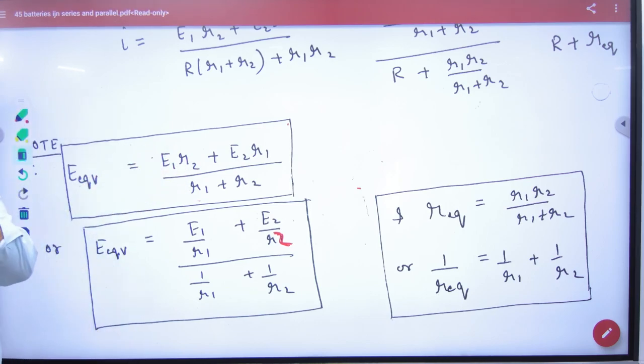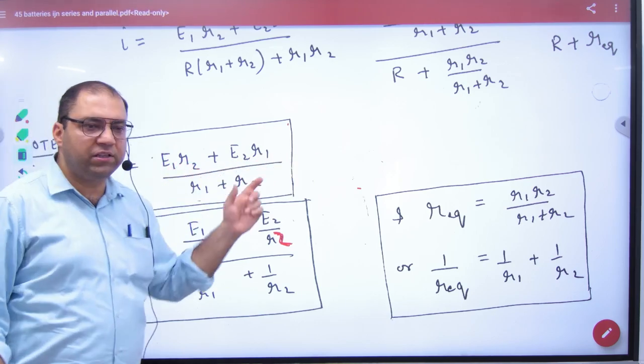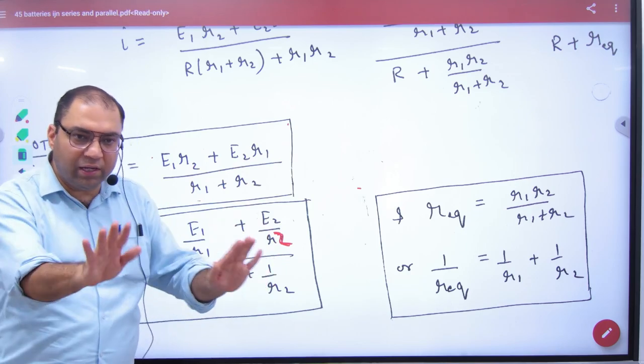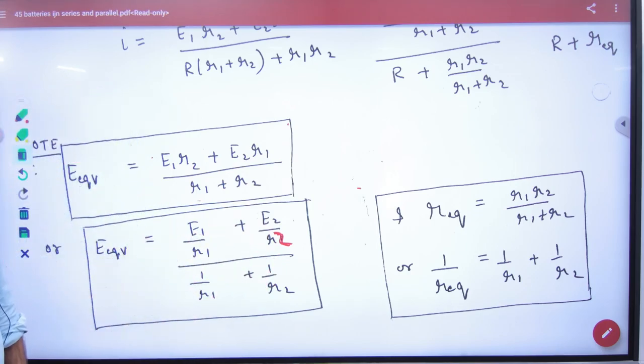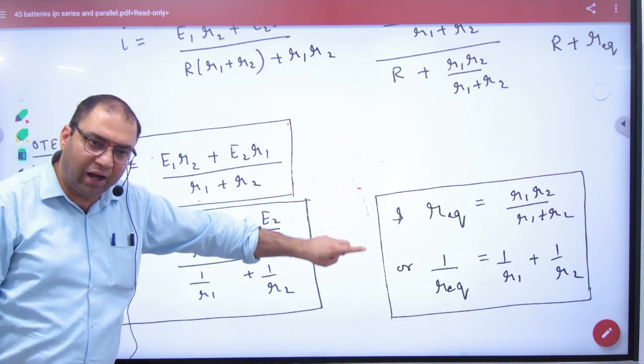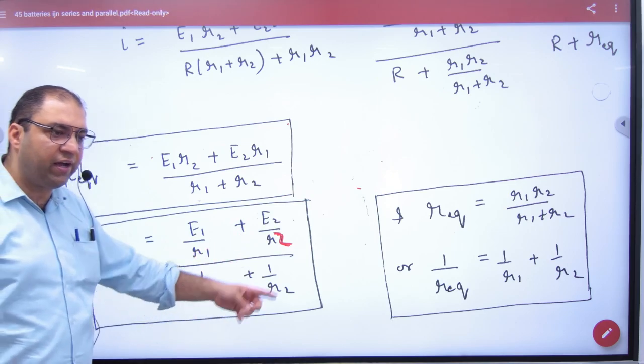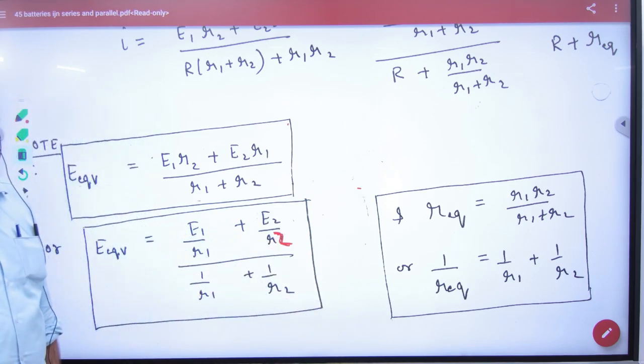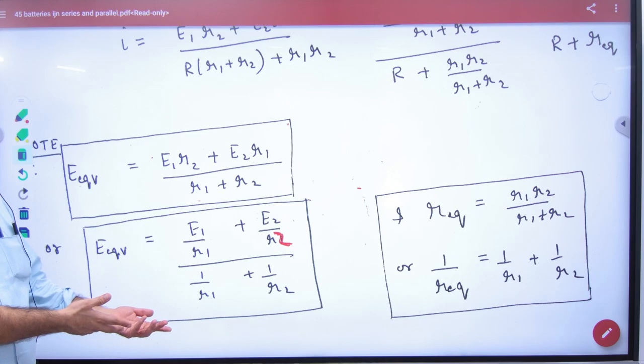This formula is for two batteries. If you think three batteries, then what is the formula? That's why you derive this formula. This formula is expandable. How? If there are three batteries, then E1 by R1 plus E2 by R2 plus E3 by R3, upon 1 by R1 plus 1 by R2 plus 1 by R3. It is also applicable to two, and this is only two.